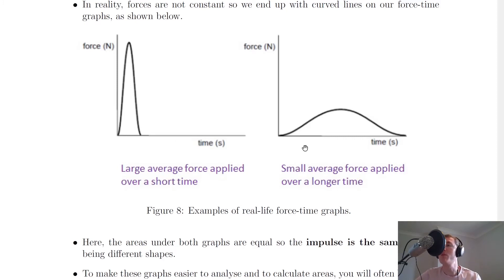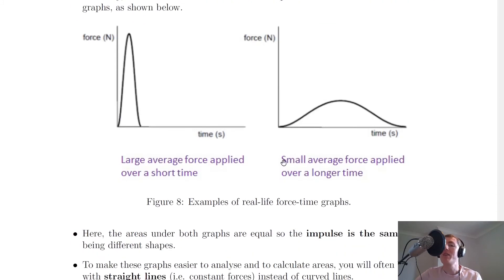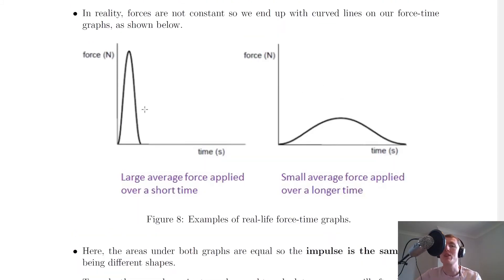We're saying the impulse is equal to the area under the graphs, despite the fact that these are two different shapes. That's just because the area in this narrower shape is equal to the area in this wider shape.